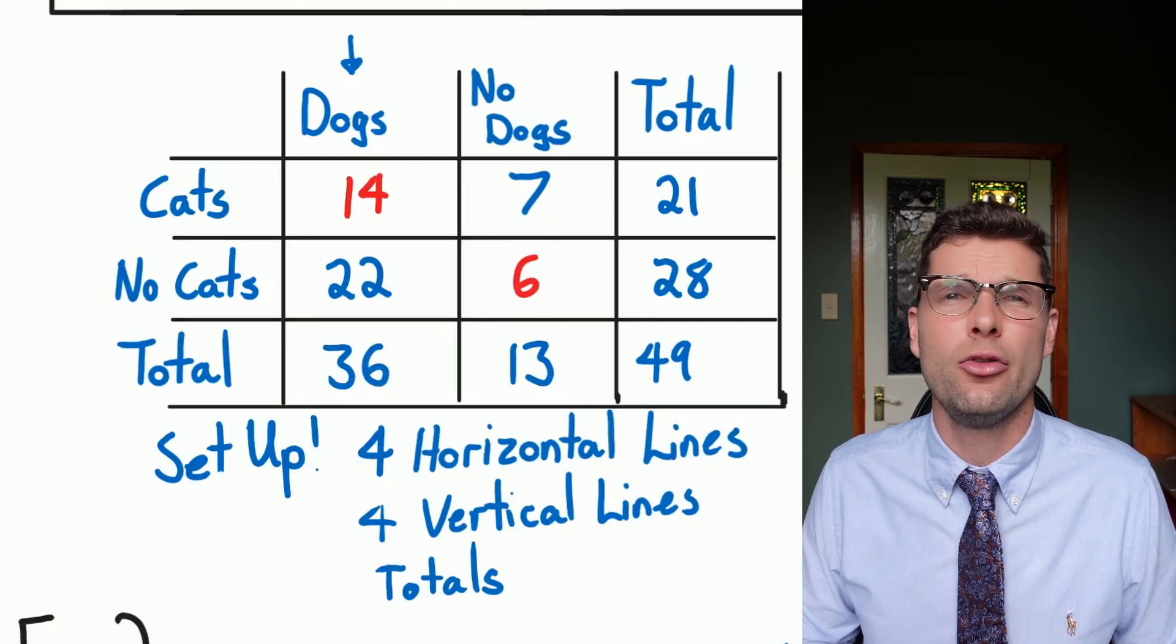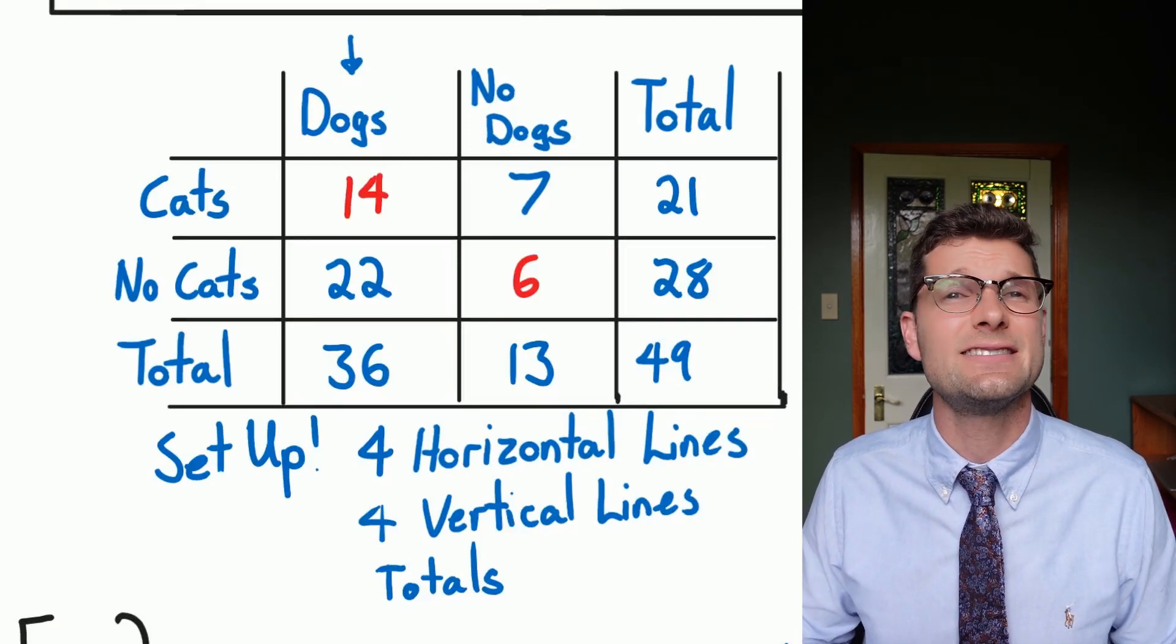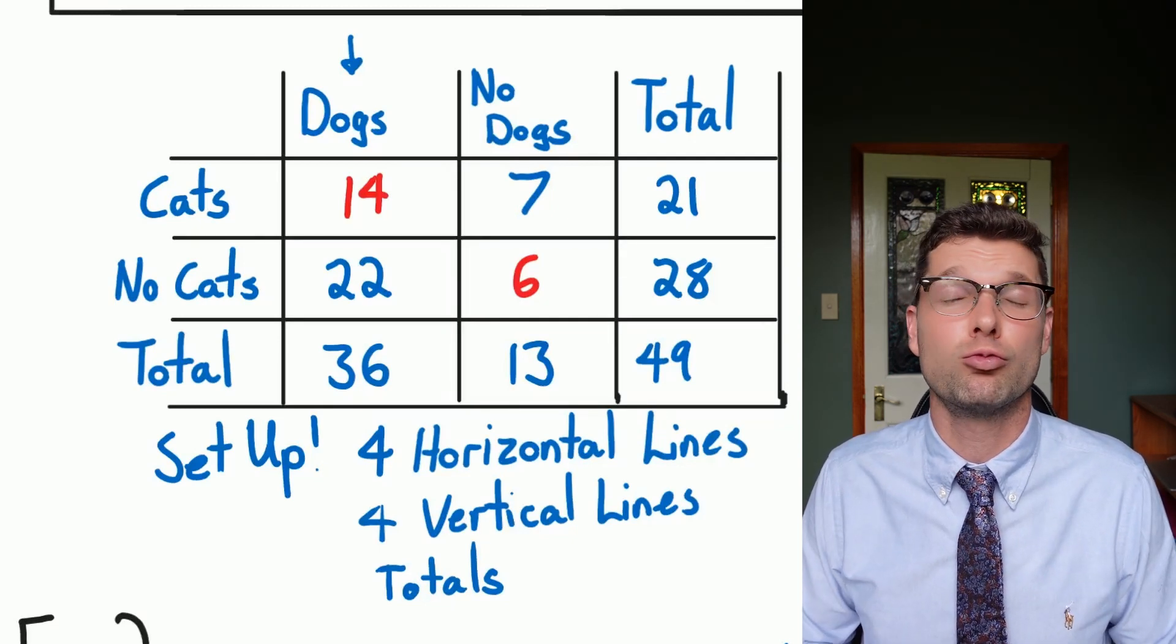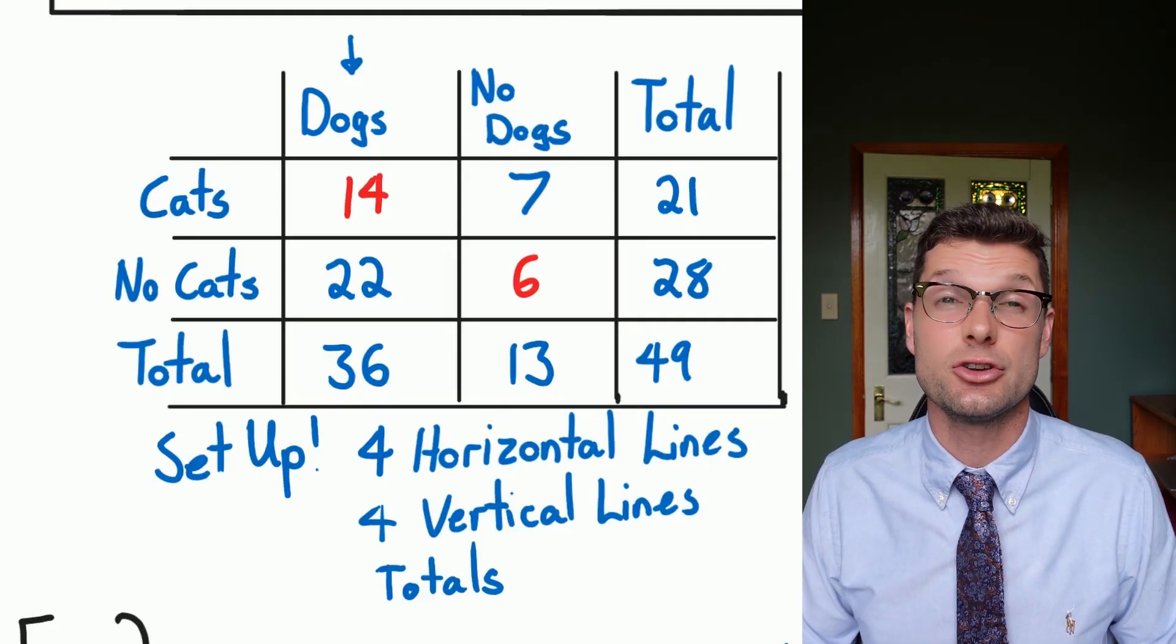So for these two-way tables the only important thing is the setup. Please do the four horizontal lines and the four vertical lines to get you started. Throw those totals in and then you're going to get into them because the math is not too hard.